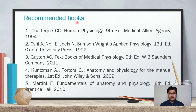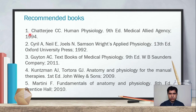Now we go to the recommended books for Physiology A and B. First, Chatterjee CC, Human Physiology, 9th edition, Medical Allied Agency, 1994 — a very old edition; a new edition can be studied. Samson Wright's Applied Physiology, 13th edition, 1992 — also old; a new edition is available. Guyton's Textbook of Medical Physiology, 9th edition, 2011, is commonly studied, with newer versions also available.